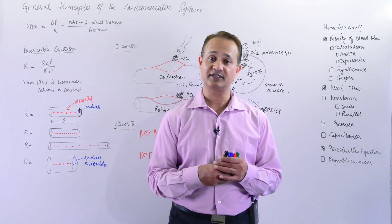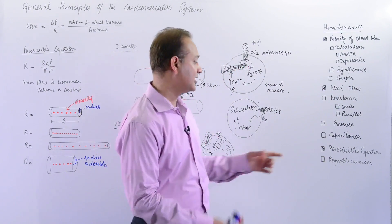All right guys, this is Mubeen. We are talking about cardiovascular system, hemodynamics. The lecture today is Poiseuille's equation.